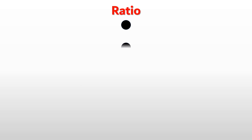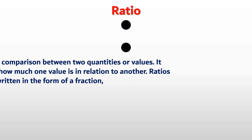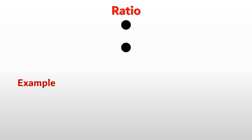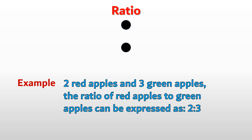Next, Ratio. A ratio is a comparison between two quantities or values. It expresses how much one value is in relation to another. Ratios are often written in the form of a fraction. Example: 2 red apples and 3 green apples — the ratio of red apples to green apples can be expressed as 2 is to 3.